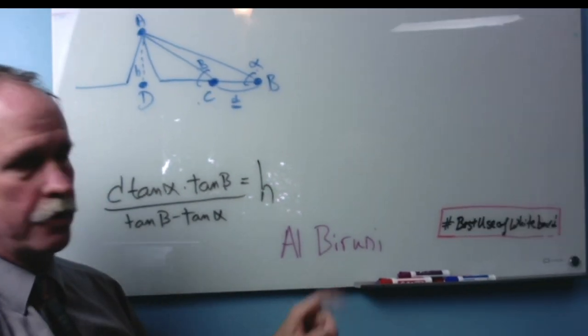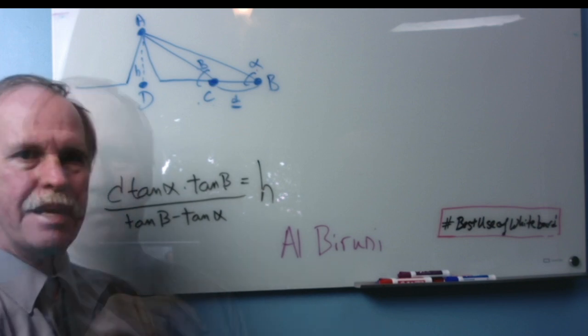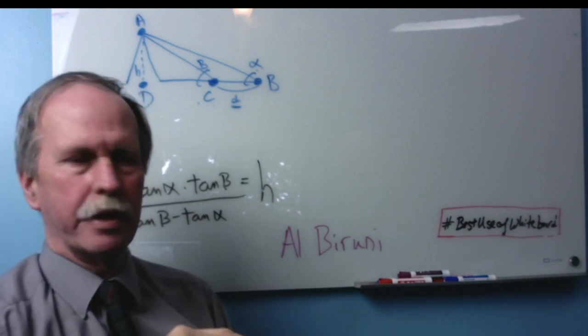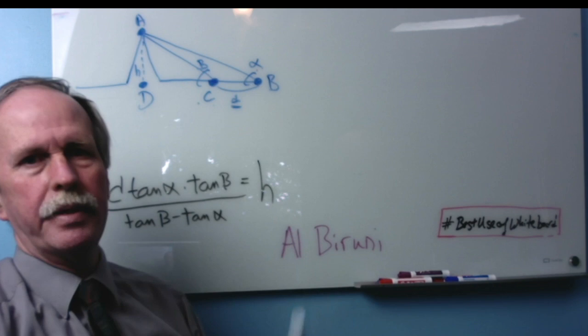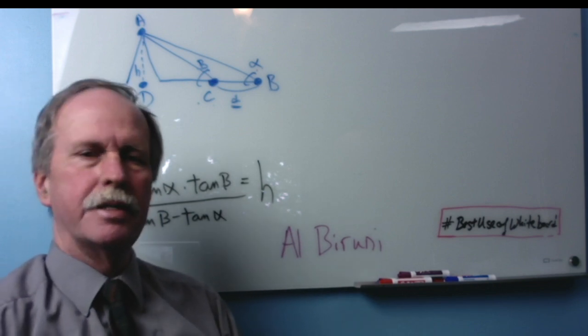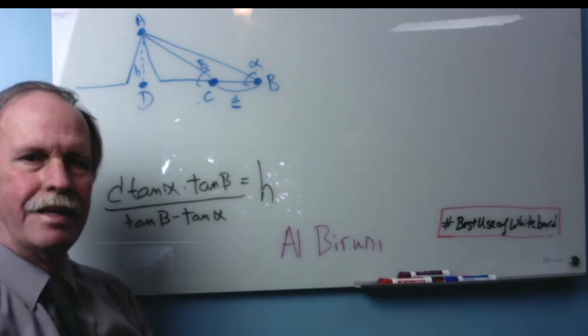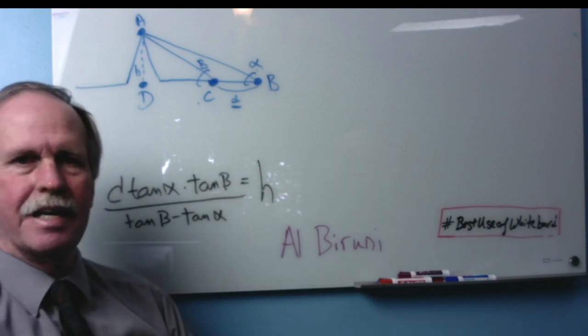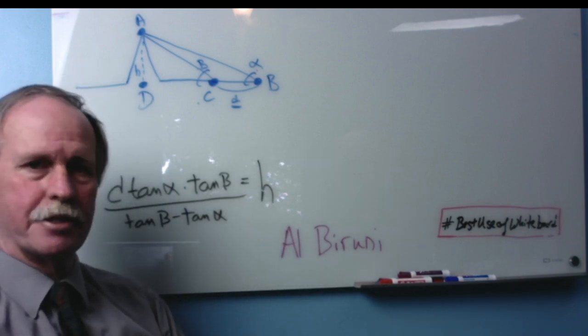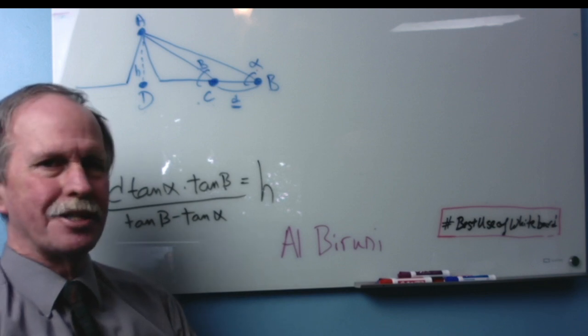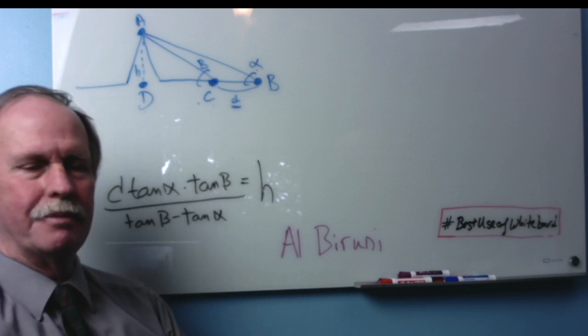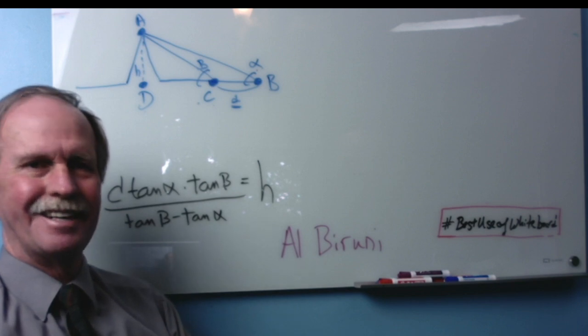And that is how Al Biruni measured the height of the mountain. Now in our next episode we're going to talk about what he did with that height of the mountain to measure the radius of the earth. So make sure you tune in for that. So this is Bob the Science Guy signing out from Northern Michigan. Thank you very much for stopping by. I hope you enjoyed this little review of trigonometry. We'll have a little bit more next week. Take care guys.